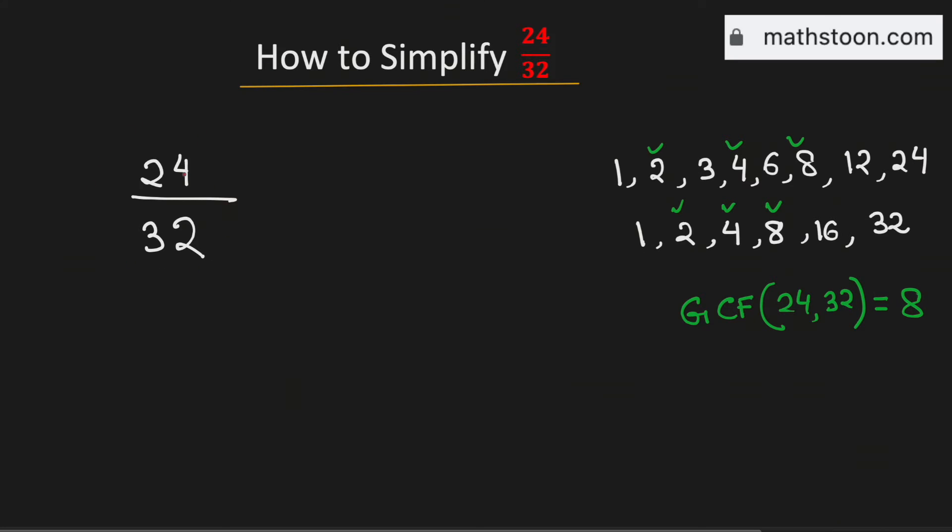Now to simplify it, we will divide both the numerator and the denominator by the greatest common factor which is 8 and by doing so, we will get 3 divided by 4.